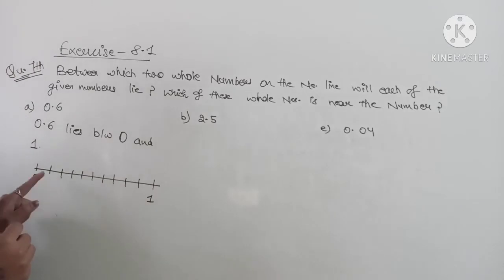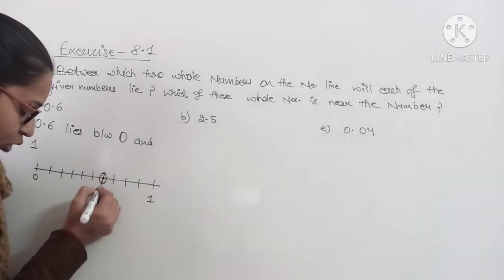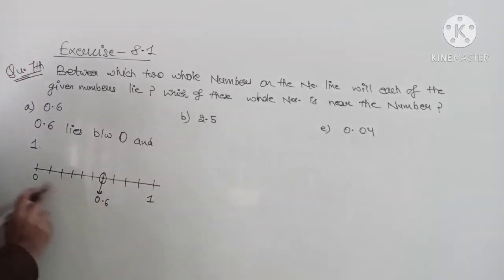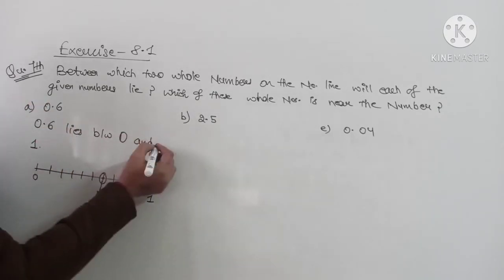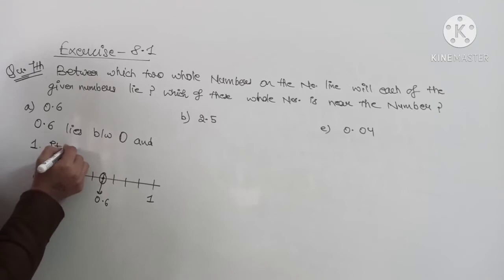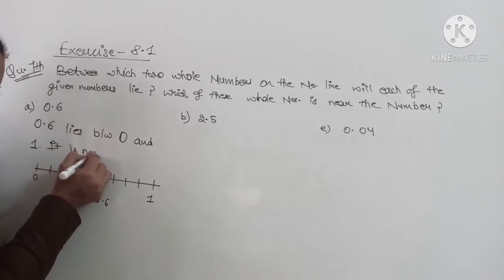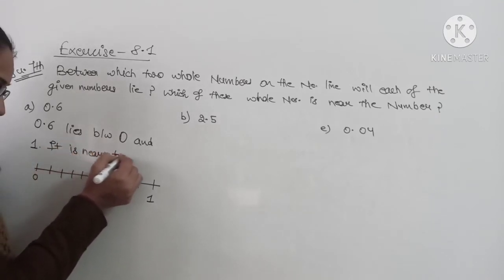Now 0.6 means 1, 2, 3, 4, 5, 6. This is 0.6. Now tell, is 0.6 near to 0 or 0.6 near to 1? Obviously it is near to 1. So you will say that it is near to 1.